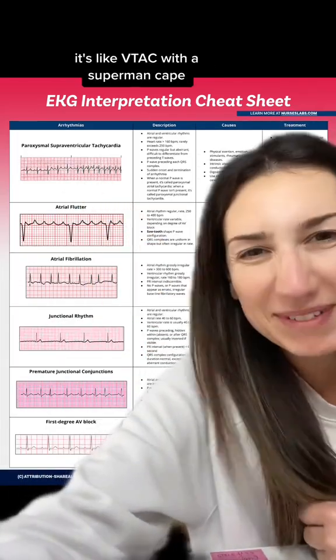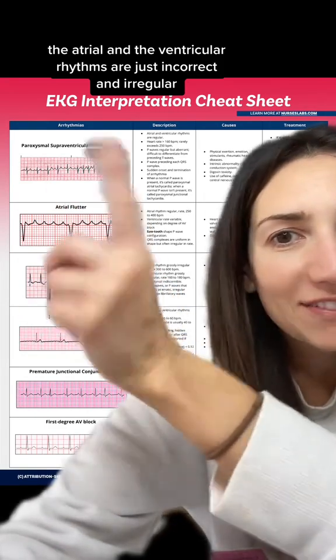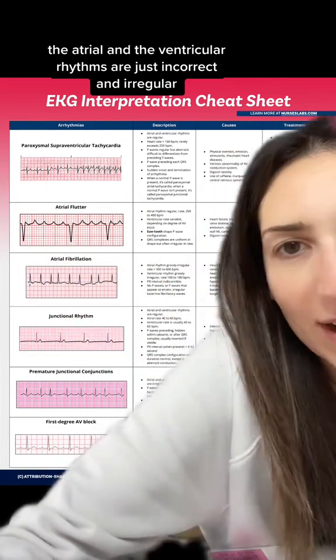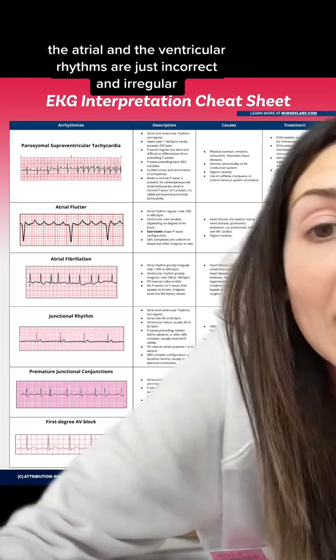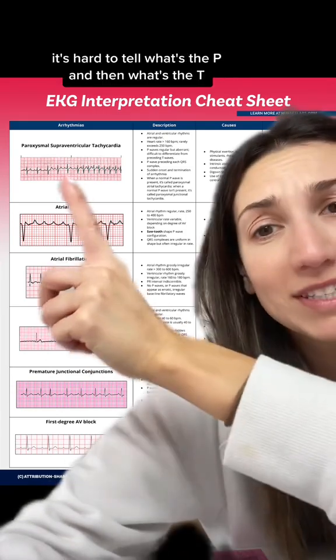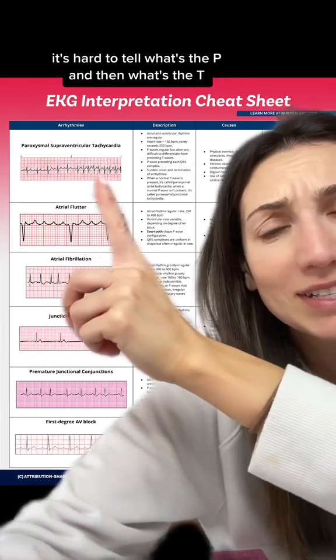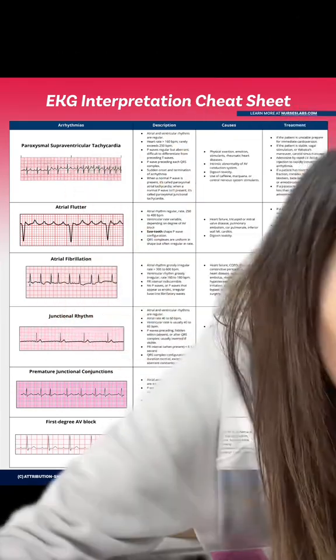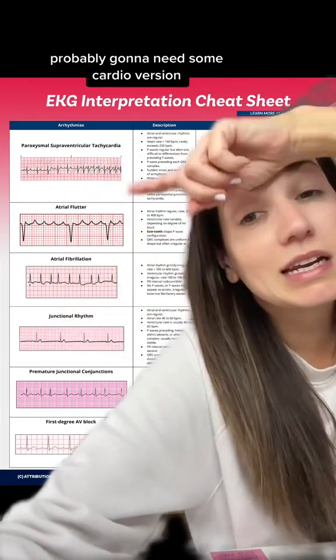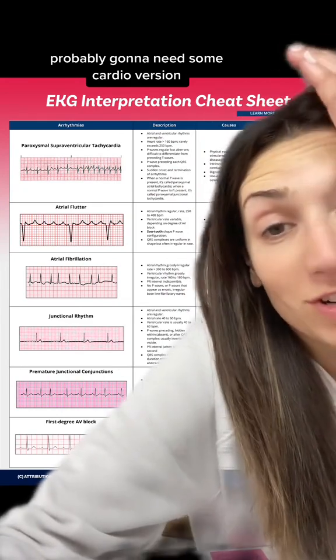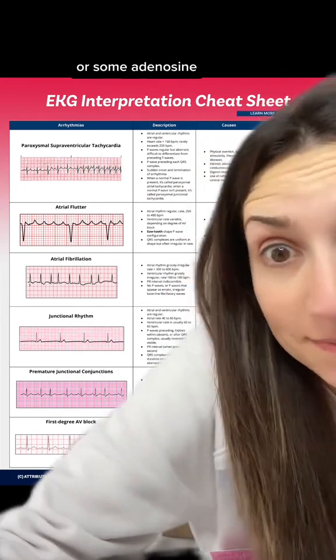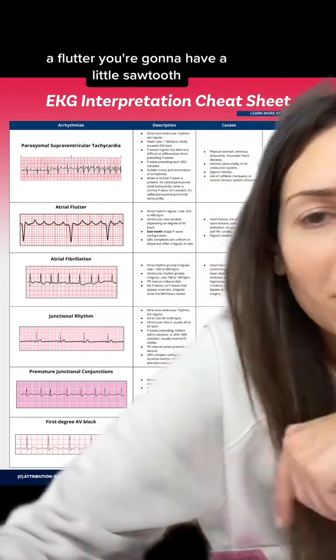Asystole — nothing's happening. This is torsades de pointes, like V-tach with a superman cape. The atrial and ventricular rhythms are irregular and it's hard to tell what's the P and what's the T. You'll probably need cardioversion or adenosine.